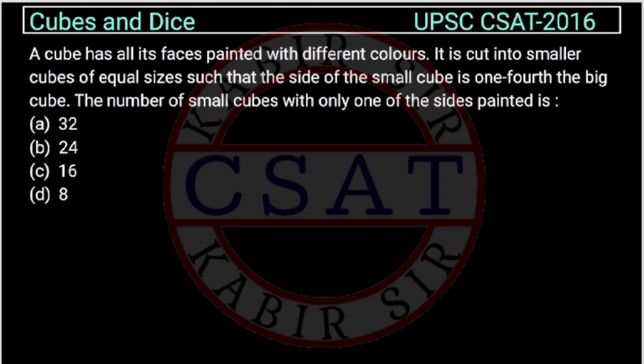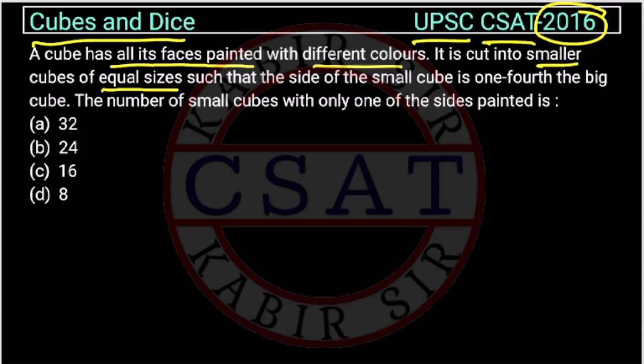Now let us see this question from the cubes and dice chapter asked by UPSC in CSAT paper of 2016. A cube has all its faces painted with different colors. It is cut into smaller cubes of equal sizes such that the side of the small cube is one-fourth the big cube. The number of small cubes with only one of the sides painted: